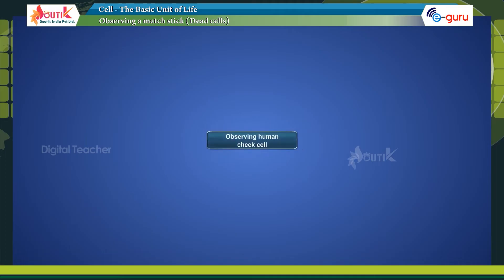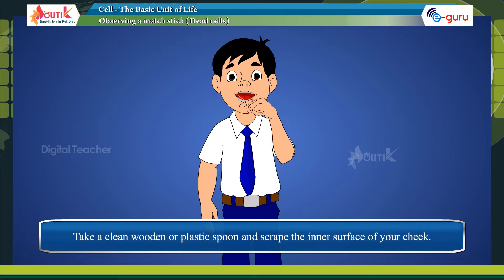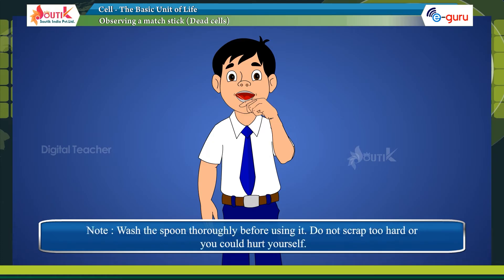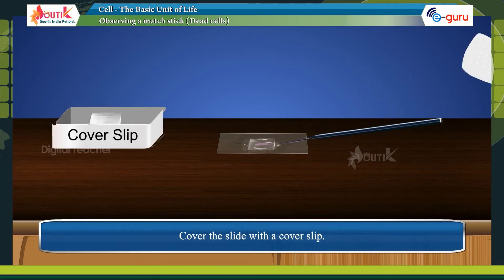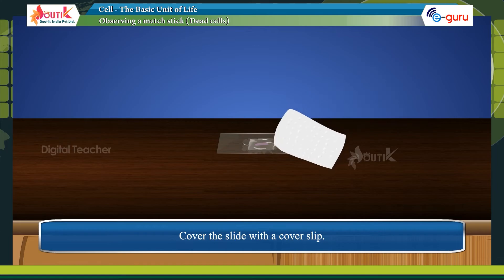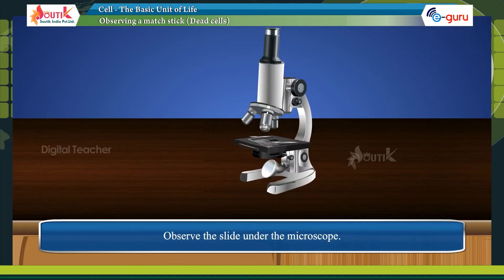Observing human cheek cells: to prepare a slide of your own cheek cell, wash your mouth thoroughly. Take a clean wooden or plastic spoon and scrape the inner surface of your cheek. Note: wash the spoon thoroughly before using it and do not scrape too hard or you could hurt yourself. Place the scraping in a drop of water on a slide and cover the slide with a coverslip. Observe the slide under the microscope.